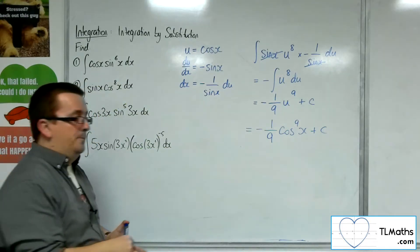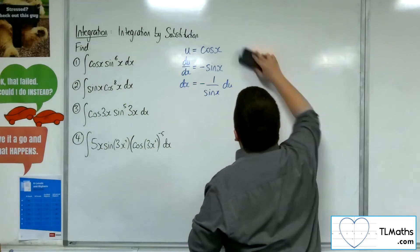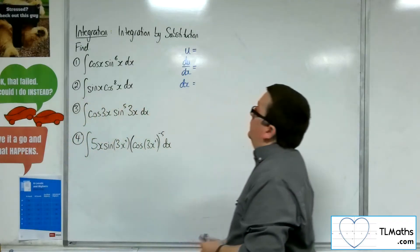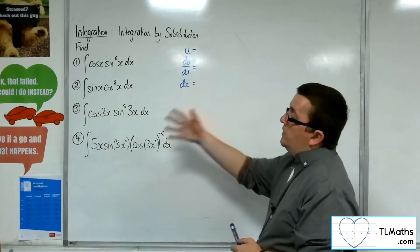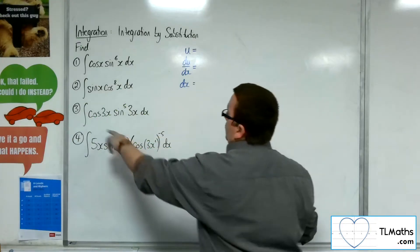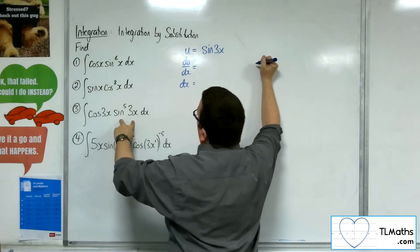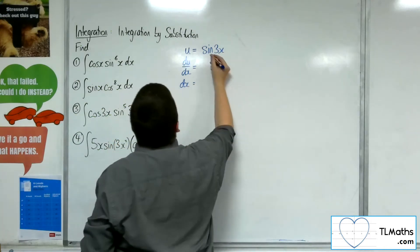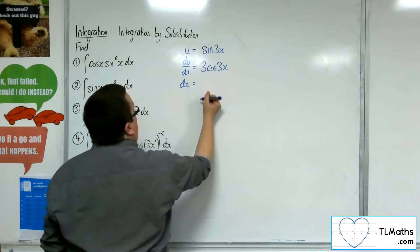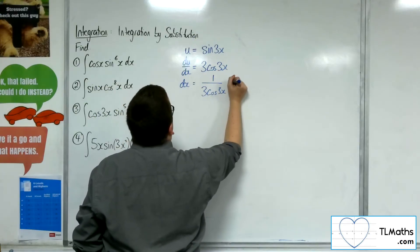And that's my answer to number 2. So number 3, we've got cosine of 3x times sine to the 5 of 3x dx. So the u this time will be the sine of 3x. Now we're going to differentiate that to get 3 cosine 3x. We then rearrange that to get dx, so 1 over 3 cosine 3x du.